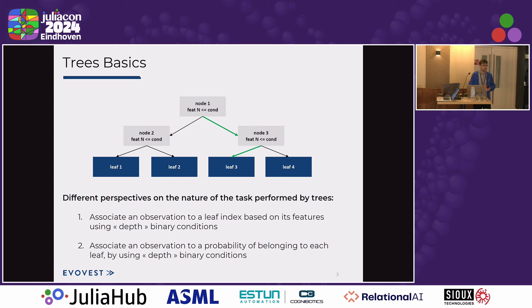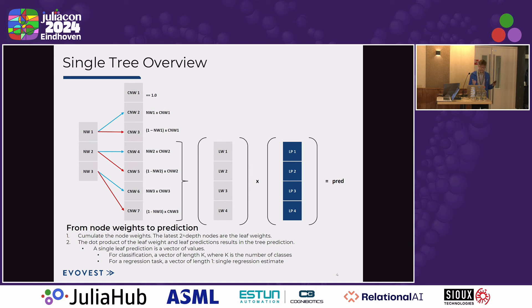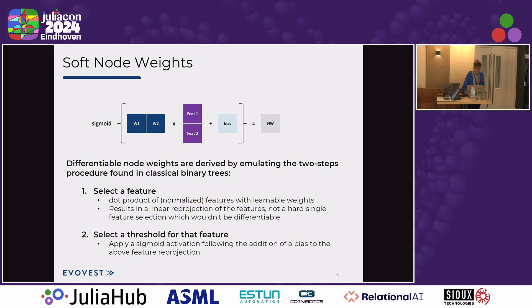With NeuroTree, we start with a full complete binary tree structure and attempt to learn the probability associated with each of the split nodes. Once we know the node weights, getting a prediction is quite trivial — we accumulate the node weights and take the leaf weights. Then we do the dot product between the leaf predictions and the leaf weights, and those leaf weights have a probability interpretation — they sum to 1. The remaining ingredient is to see how we get a differentiable, smooth node weight, and as you can see on the top diagram, you might recognize the good old dense operator — and that's really all there is to understand here.